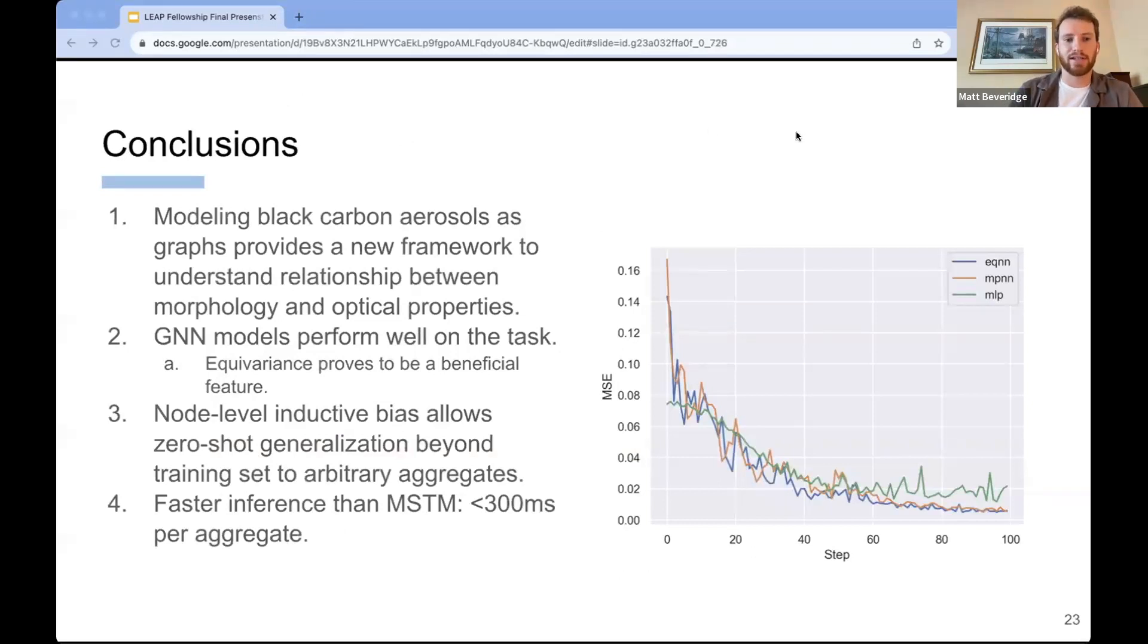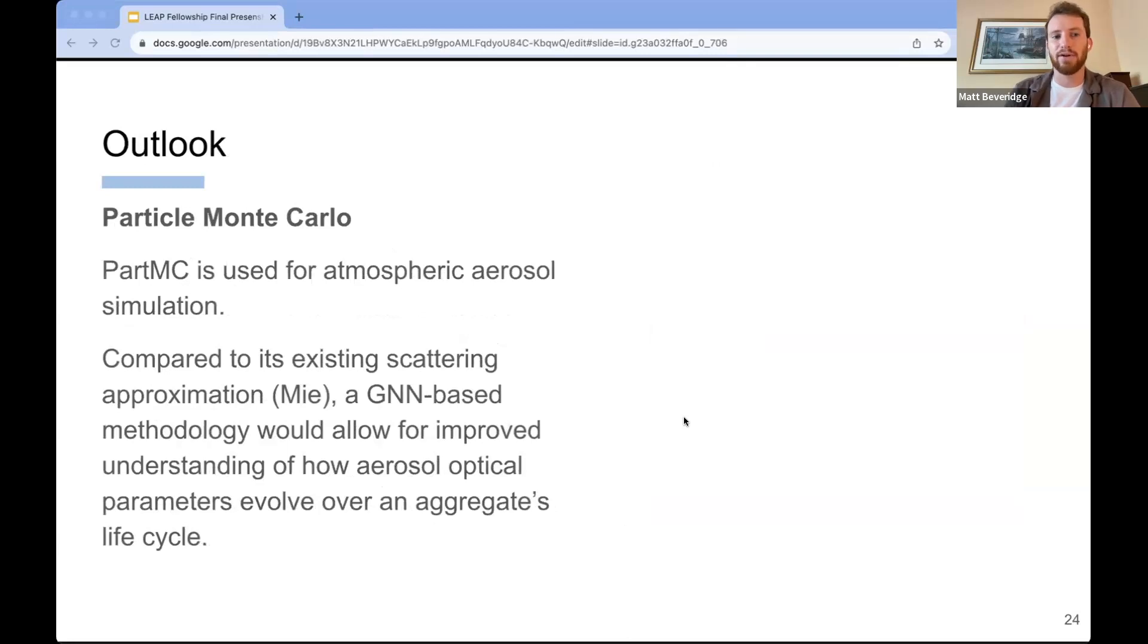So in this work, one thing that we're interested in doing is basically finding a way to speed up the prediction of optical properties for these aggregates compared to analytical methods such as multi-sphere T matrix or Mie theory. We're successful in doing so as the models are able to perform inference in under 300 milliseconds, as well as seeing the inductive bias of the node level, the node level inductive bias of each of the graph neural networks, and ability to generalize beyond the scene training data into larger aggregates. And one thing that we found to be very important in this would be the equivariance of the graph network opposed to simply invariance.